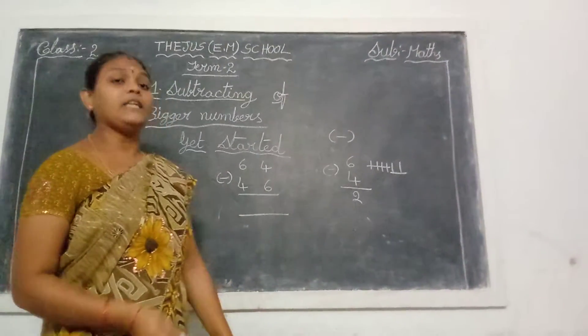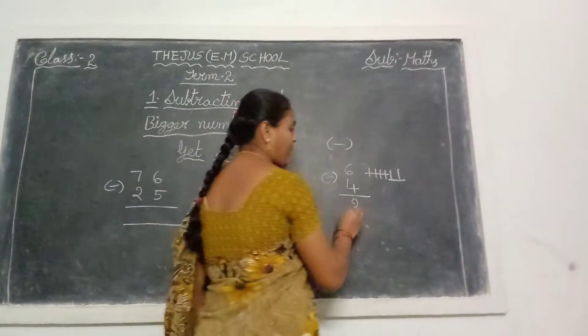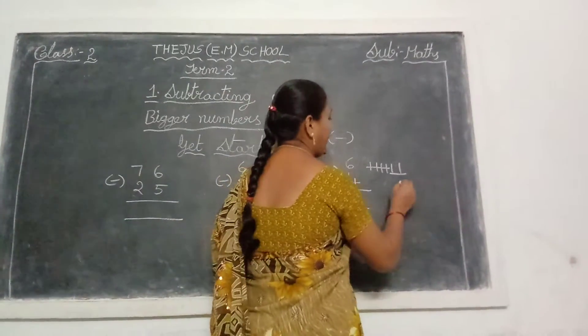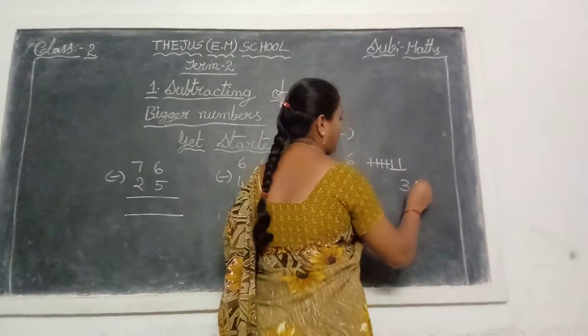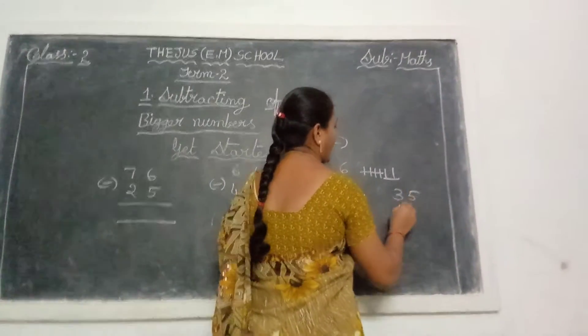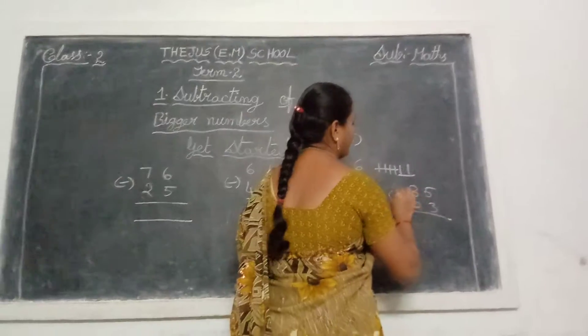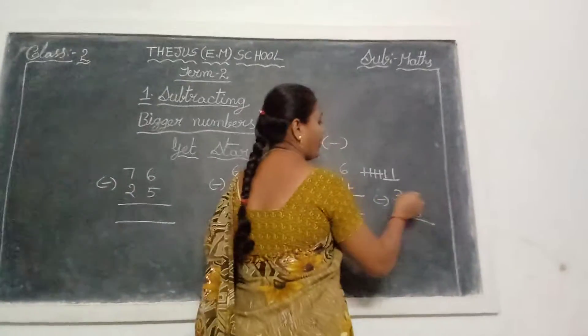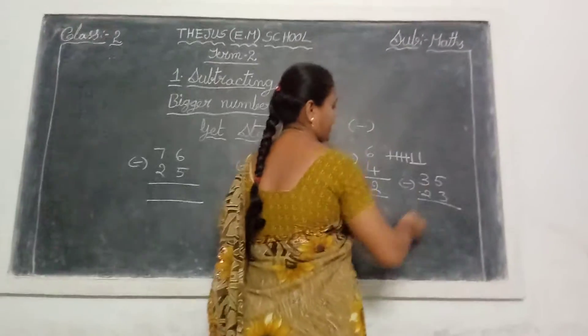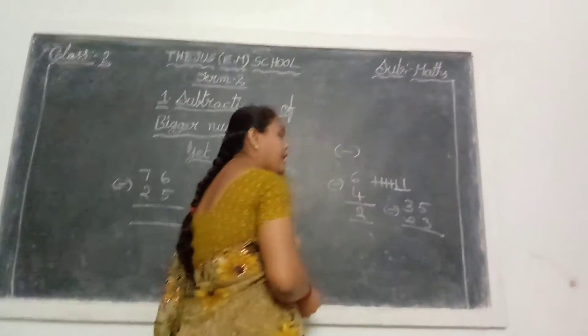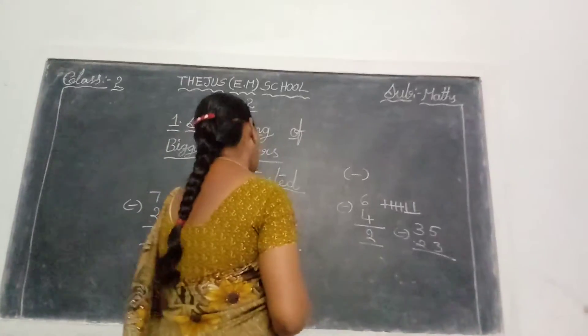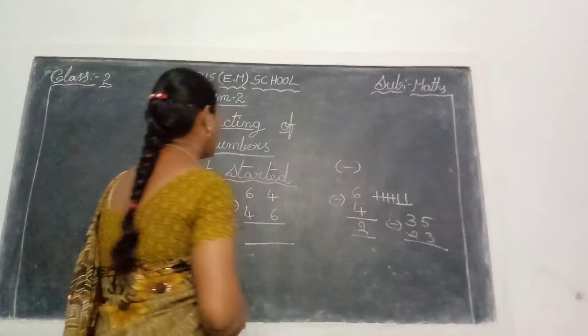In Term 1 book, you did the subtraction with only double-digit numbers. Now we do subtractions.